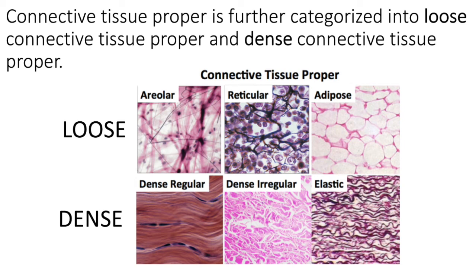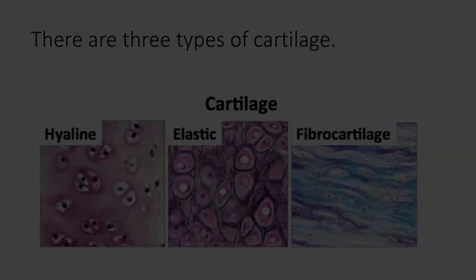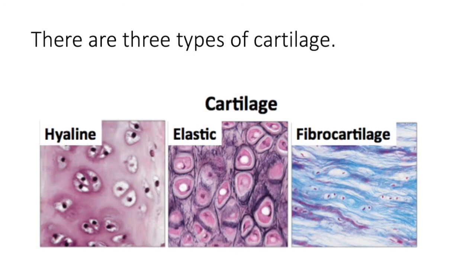Cartilage is a firm yet flexible type of tissue — not as strong as bone, but certainly durable and flexible. There are three types of cartilage: hyaline cartilage, elastic cartilage, and fibrocartilage. Each is found in very different locations in the body, and each has a unique structure and function.